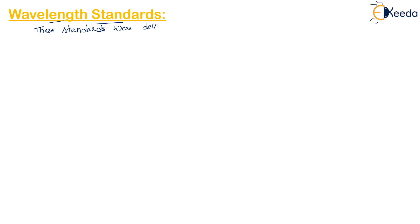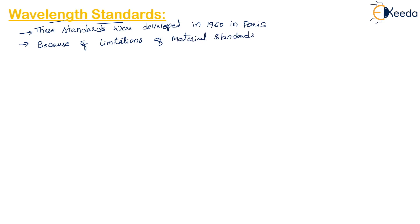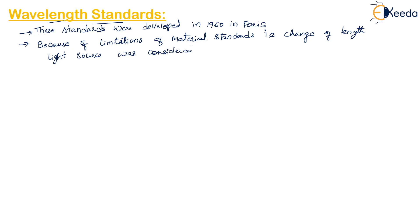These standards were developed in the 1960s because of the limitations of material standards. A light source was considered to be used as the basic unit to define the primary standard.